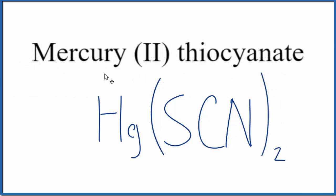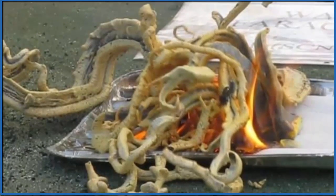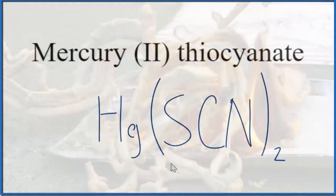Mercury(II) thiocyanate is really interesting. There's something called the Pharaoh's serpent when you light this on fire, and you get a really interesting reaction. There's a link at the end of this video if you want to see the Pharaoh's serpent in action.